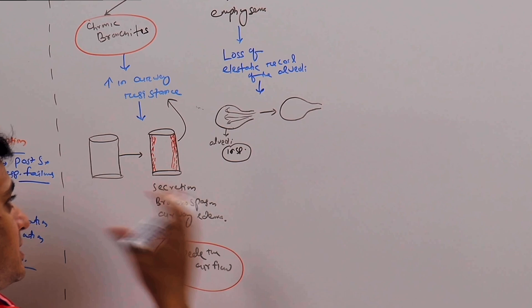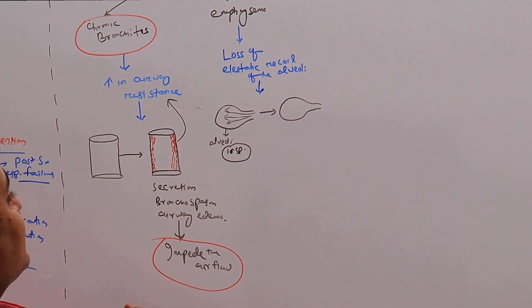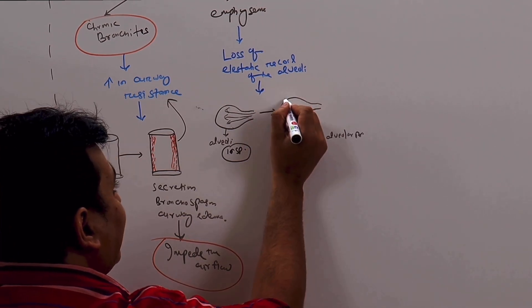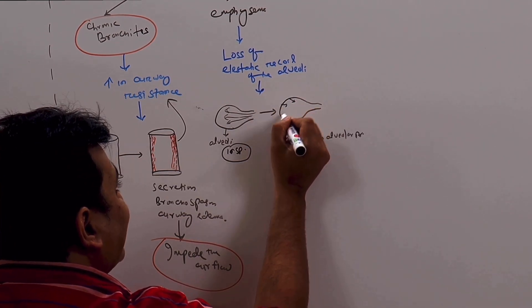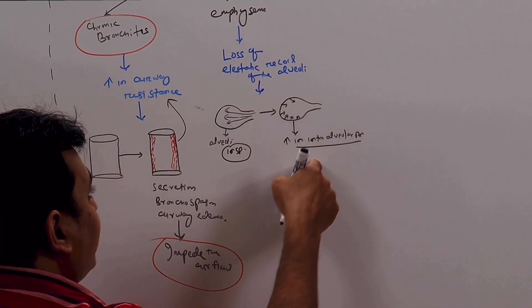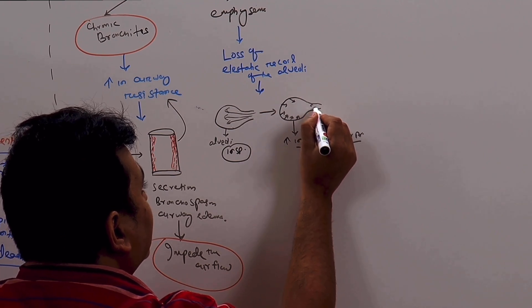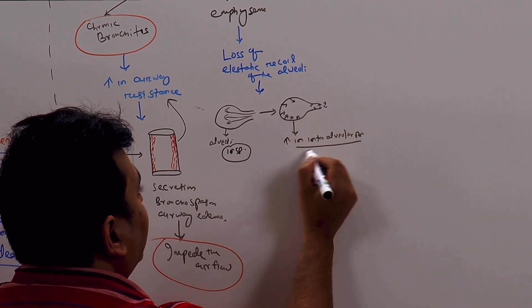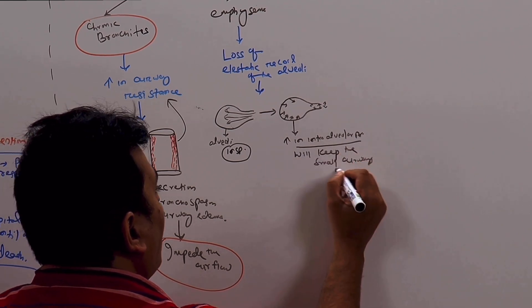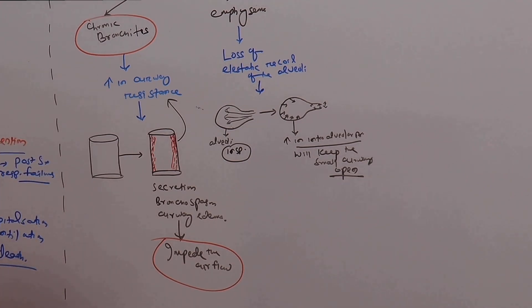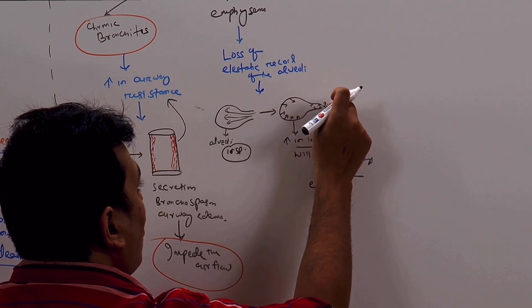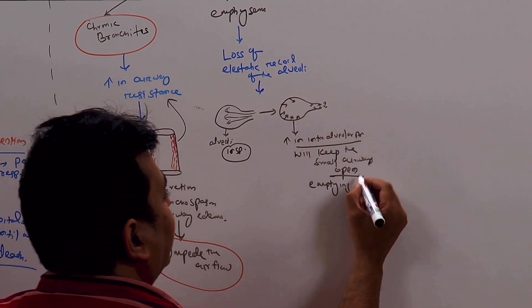So what happens during expiration? Same thing, because now the elastic recoil of the alveoli is such that there is an increase in intra-alveolar pressure. Because of the elastic recoil, the alveolar wall tries to contract inside and that will create an increase in intra-alveolar pressure, and that pressure will splint the small airways open, will keep the small airways open. So that is emptying of the alveoli. The pressure keeps it open, it is emptying of the alveoli.